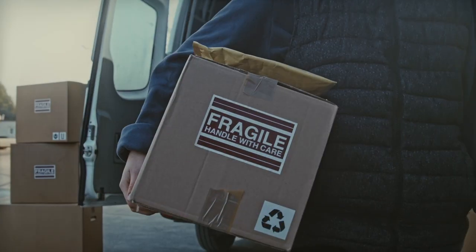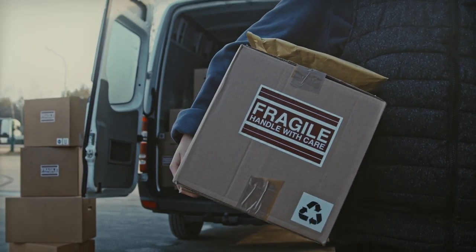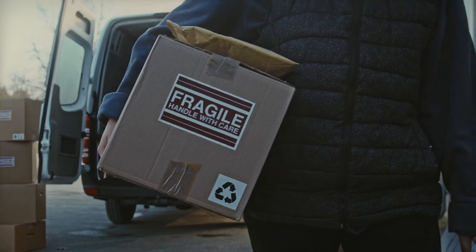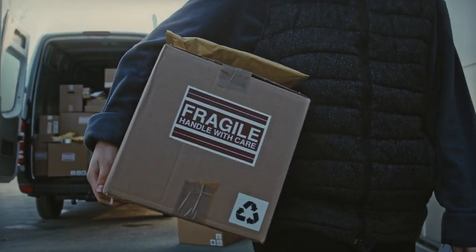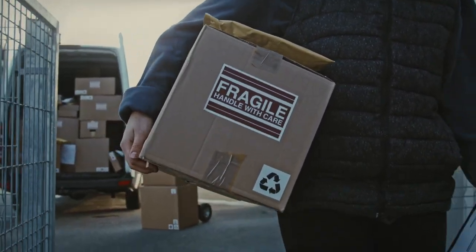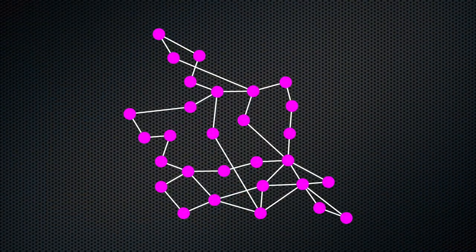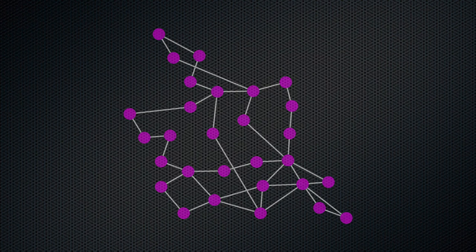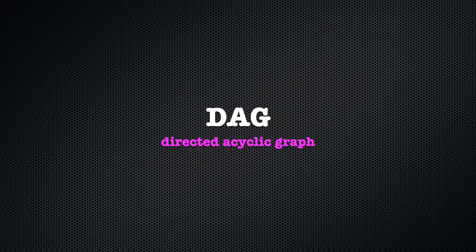Git stores its data in a graph structure, but not one like Facebook's Social Graph where connections can go all over the place and in all directions. Instead, it uses a Directed Acyclic Graph, or DAG, which imposes two additional constraints on the graph.